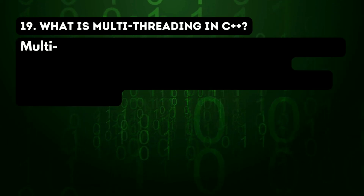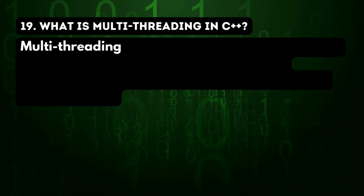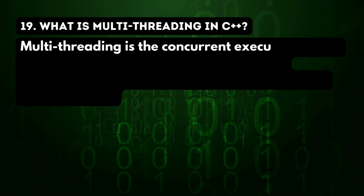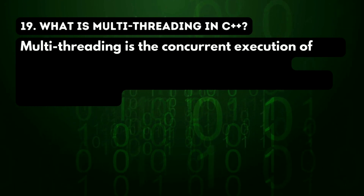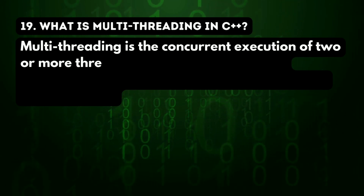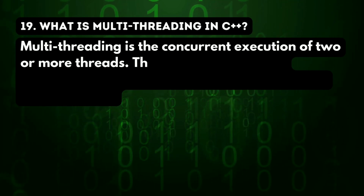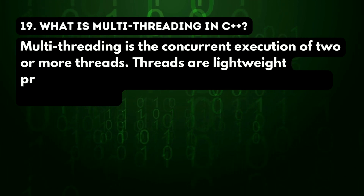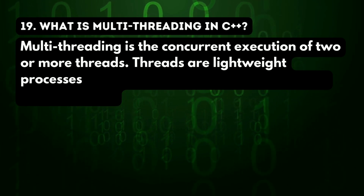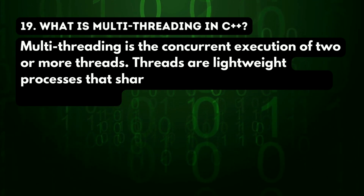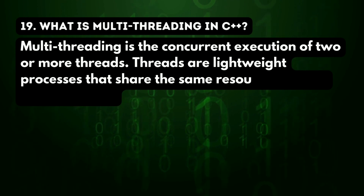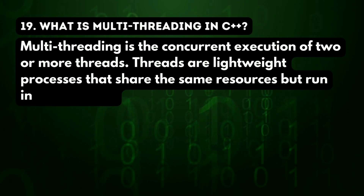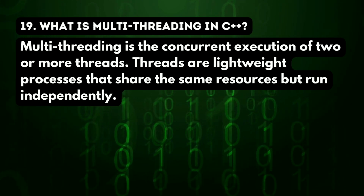19th question: what is multithreading in C++? Multithreading is the concurrent execution of two or more threads. Threads are lightweight processes that share the same resources but run independently.